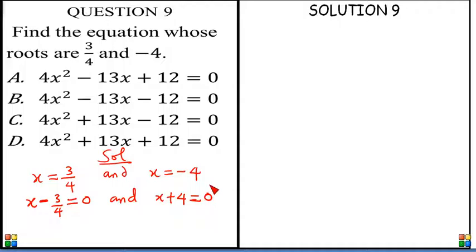So we can bring the two together. That is x minus 3 over 4, multiplying the other one, x plus 4. The first one is 0, the second one is 0, 0 times 0 giving us 0. So we want to expand this.